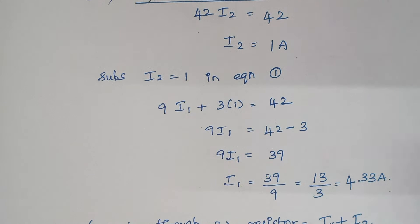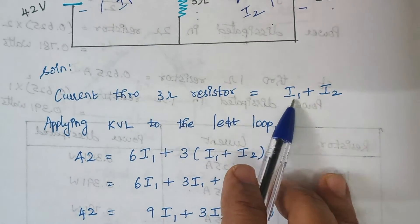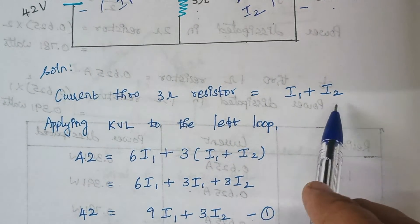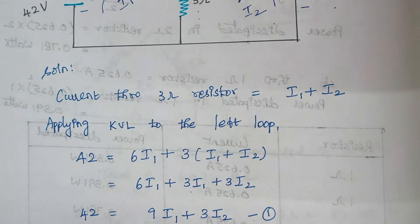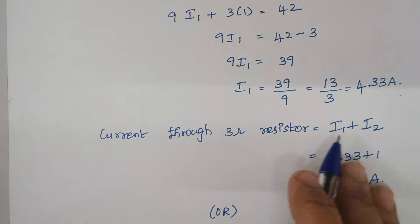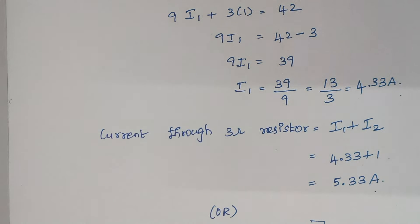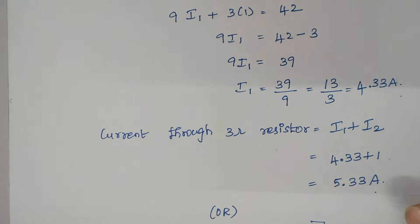We have now calculated I1 = 4.33 amps and I2 = 1 amp. Since the current flowing through the 3 ohm resistor is I1 plus I2, substituting gives 4.33 plus 1 = 5.33 amps. This is the answer using the first method. We can also use the matrix method to solve the same problem.